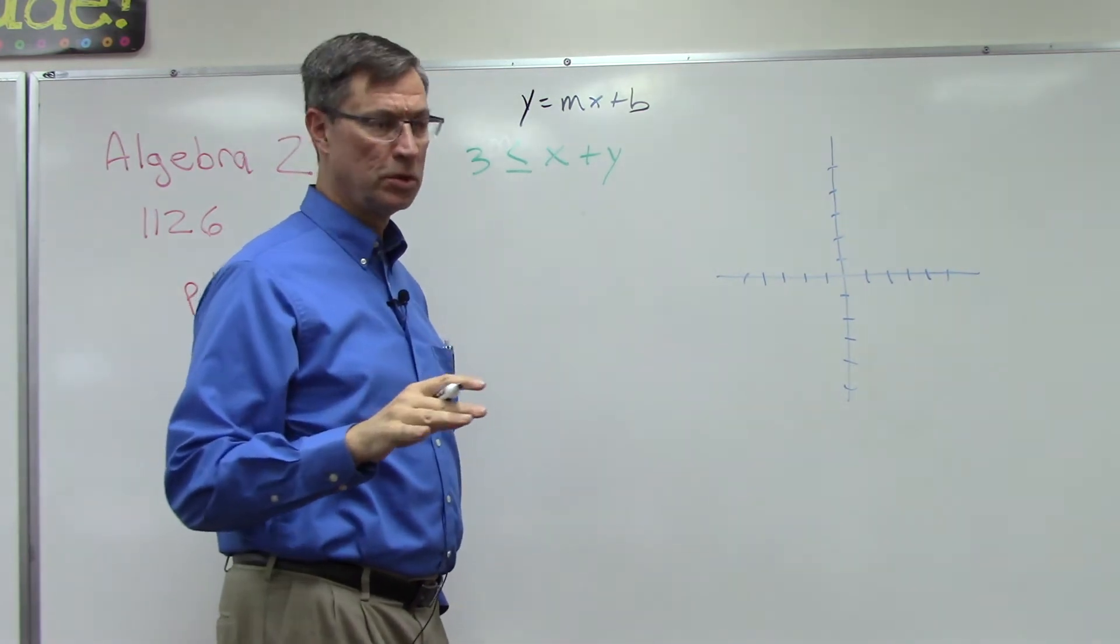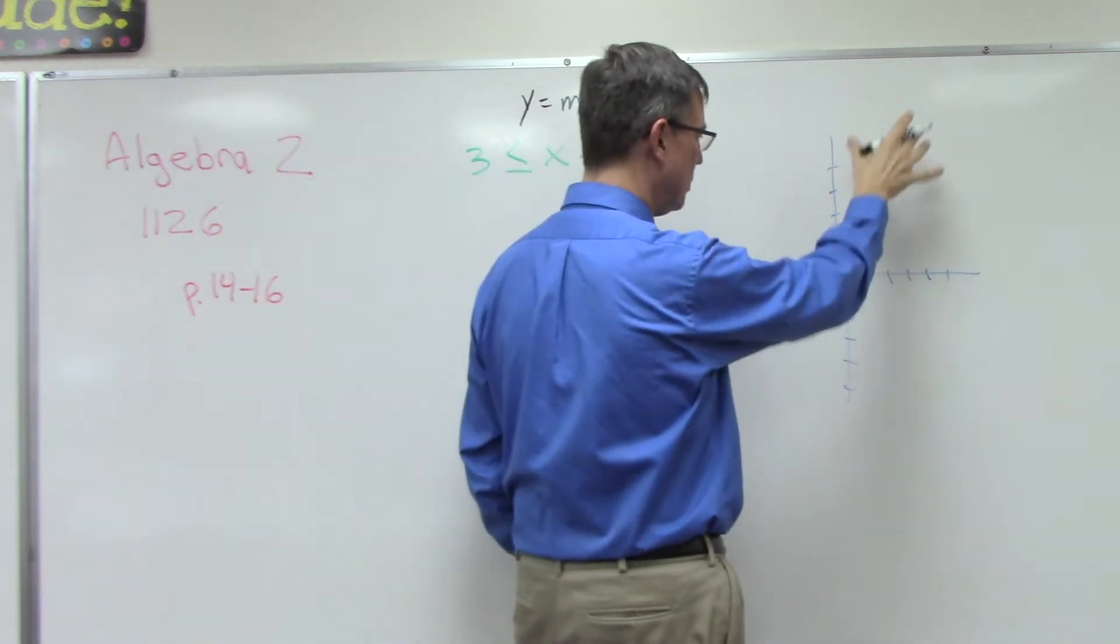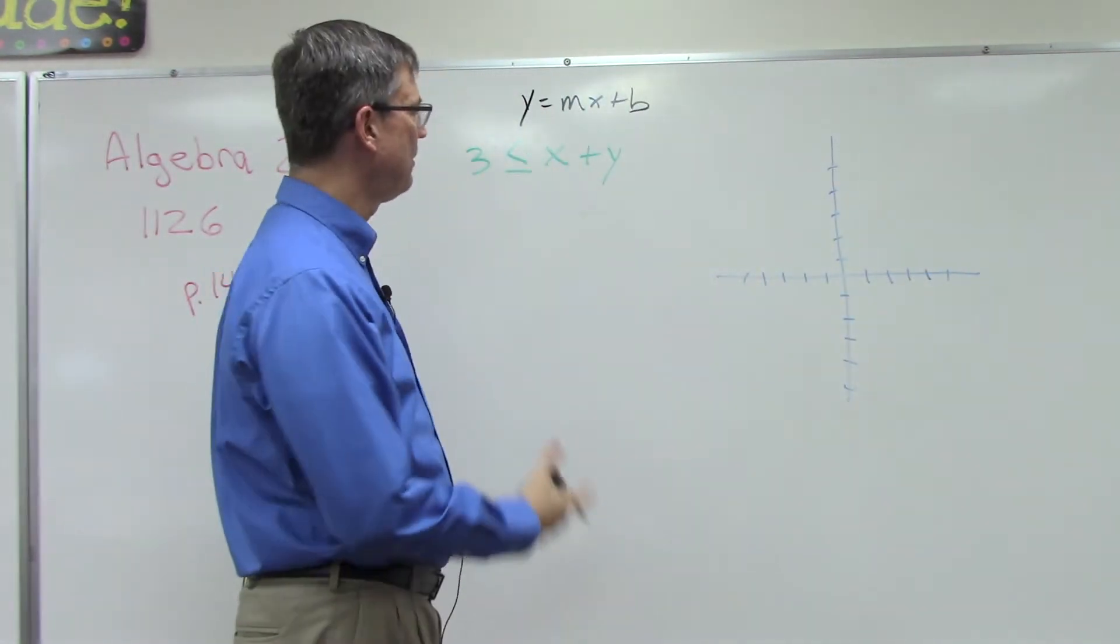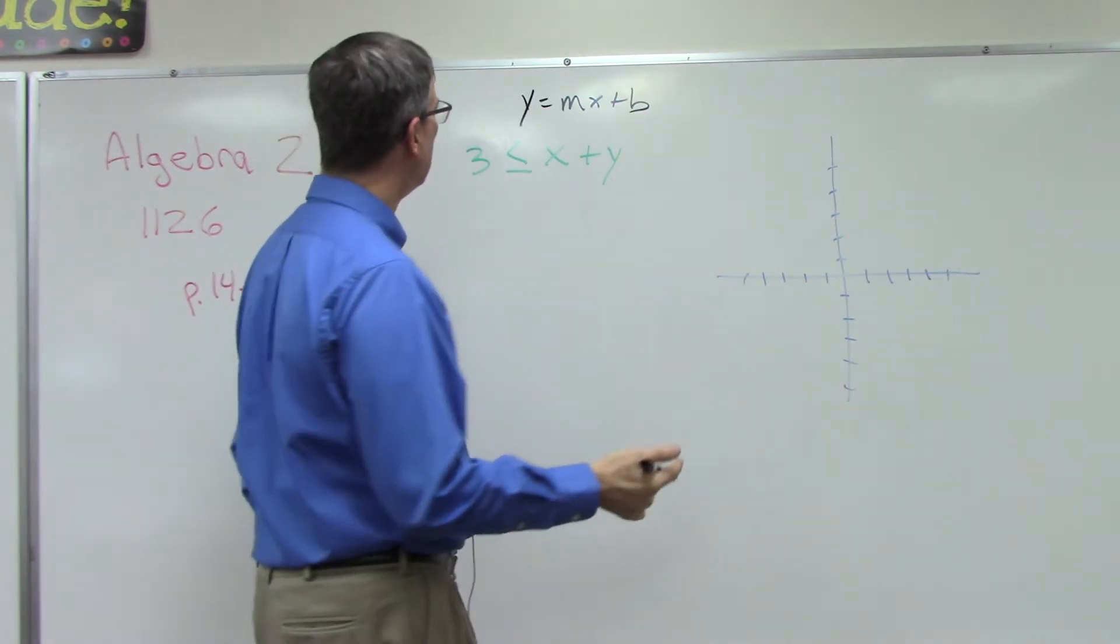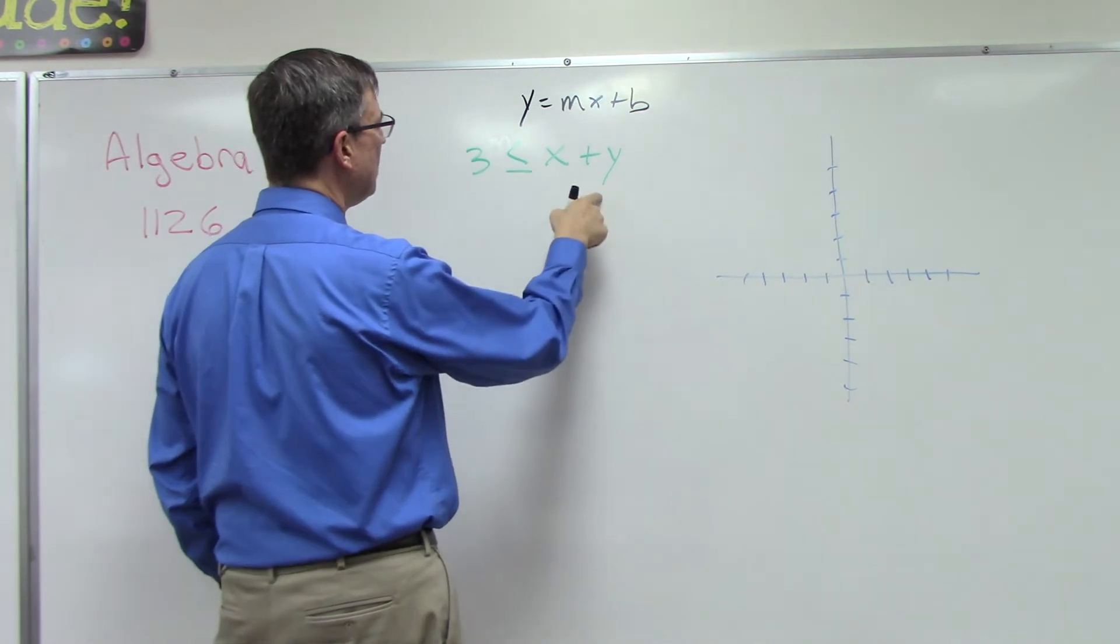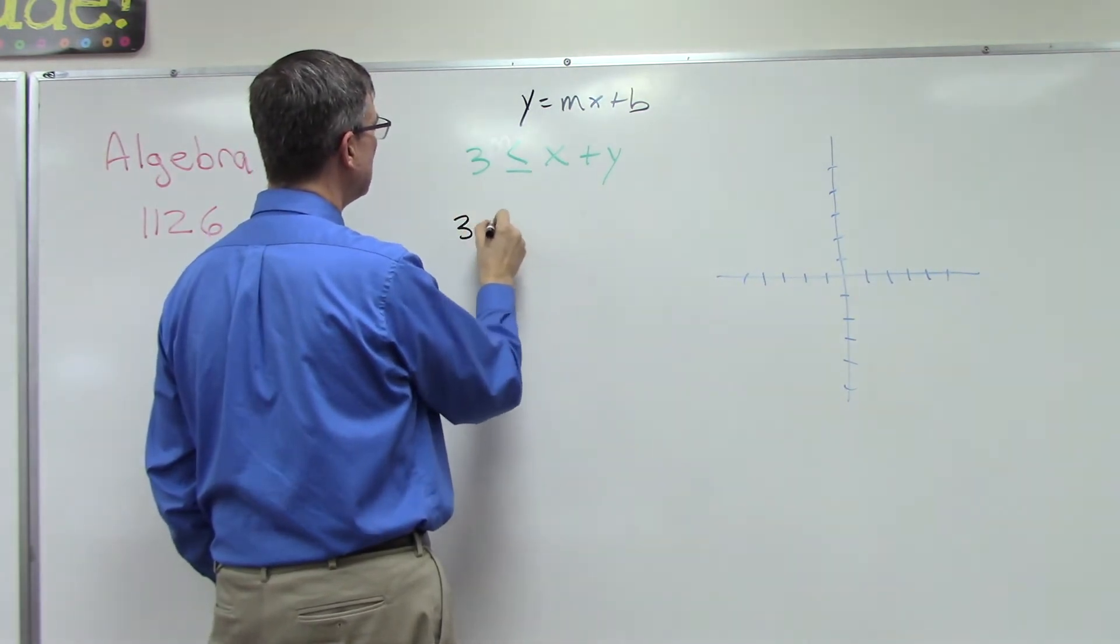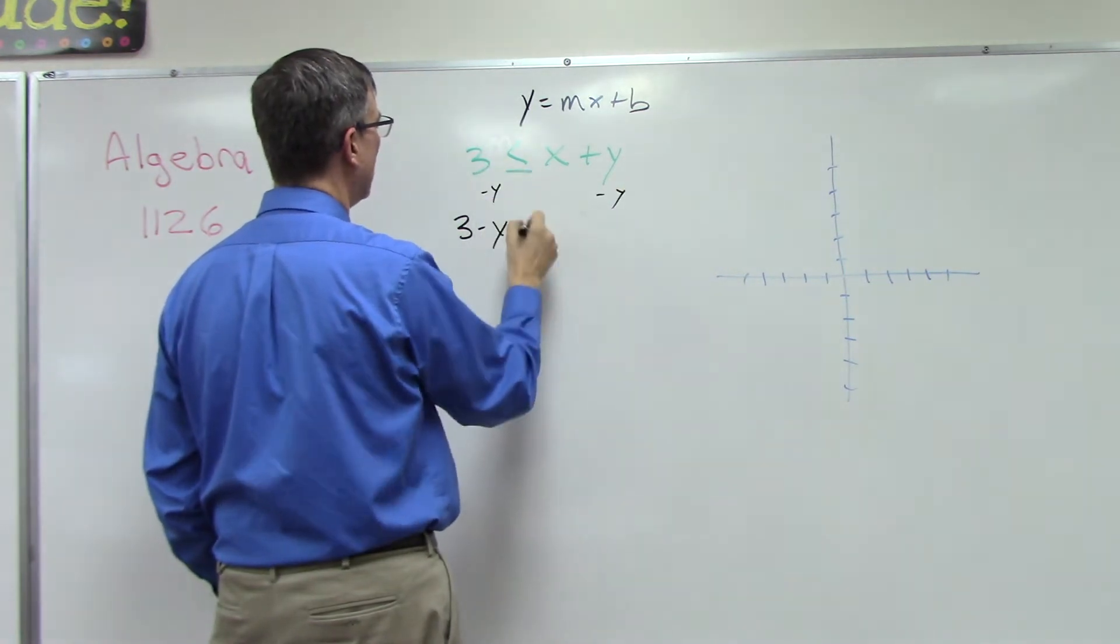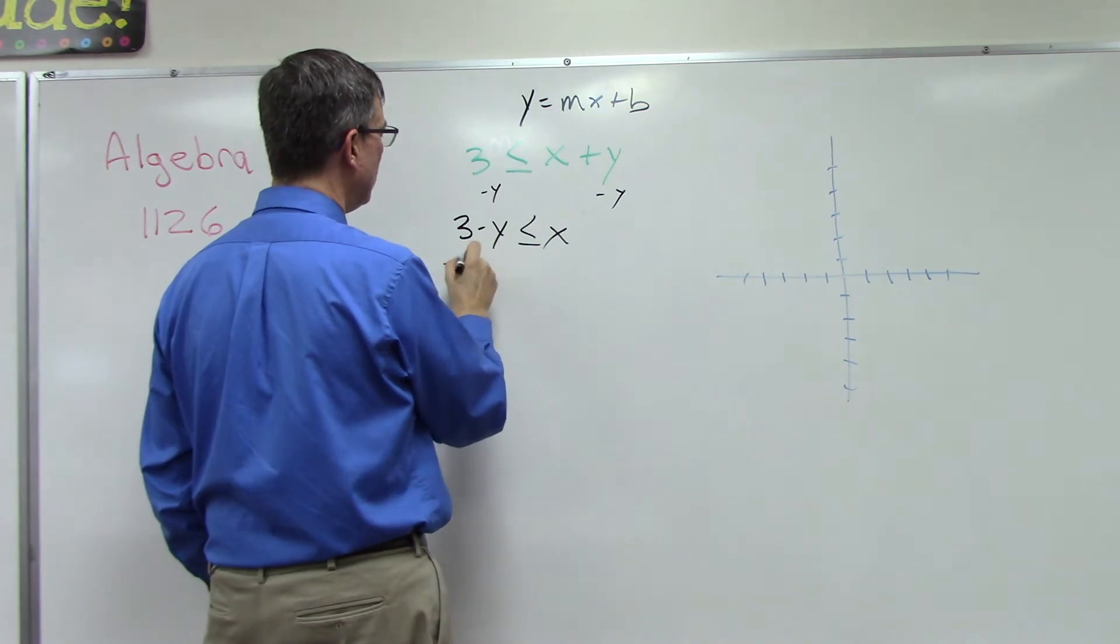Then it's very easy to bring that over and just put it right on the graph. We're going to review one problem with you here, and then you can easily do the rest yourself. So I need to get the y on the left, so I'm going to start by subtracting y on both sides. Less than or equal to x. Now I need to get rid of the three.